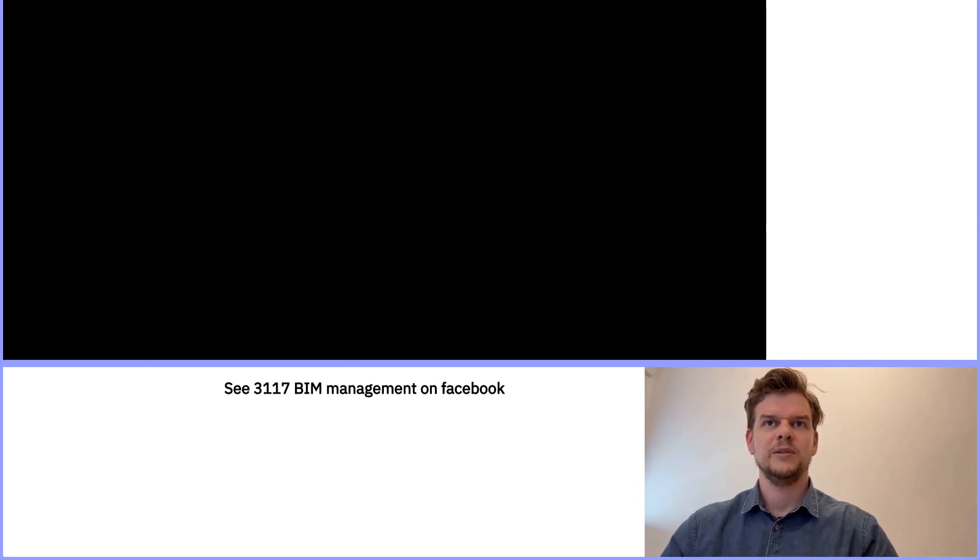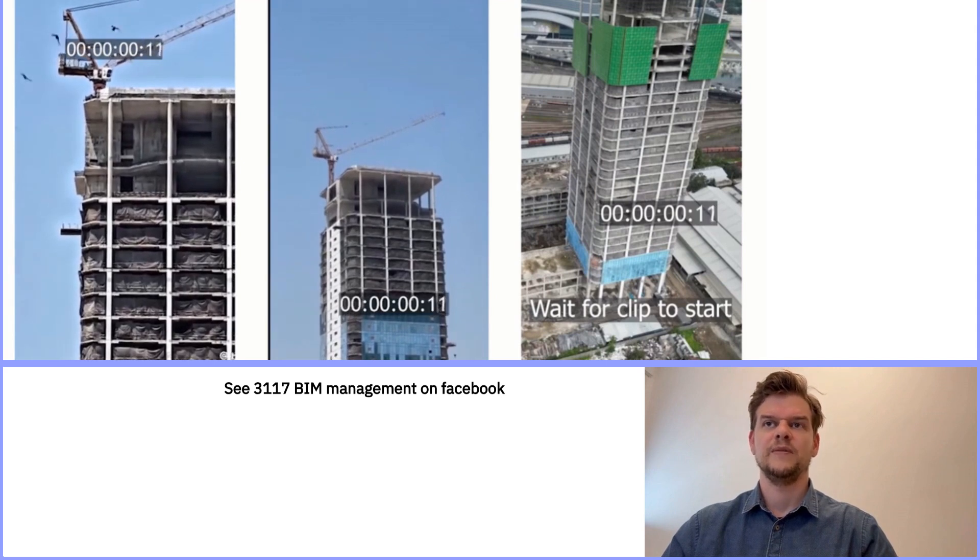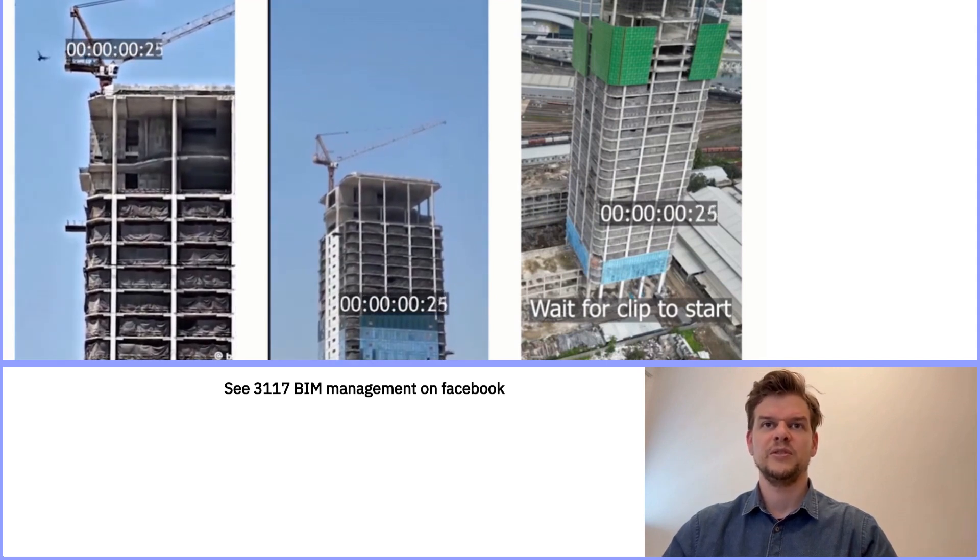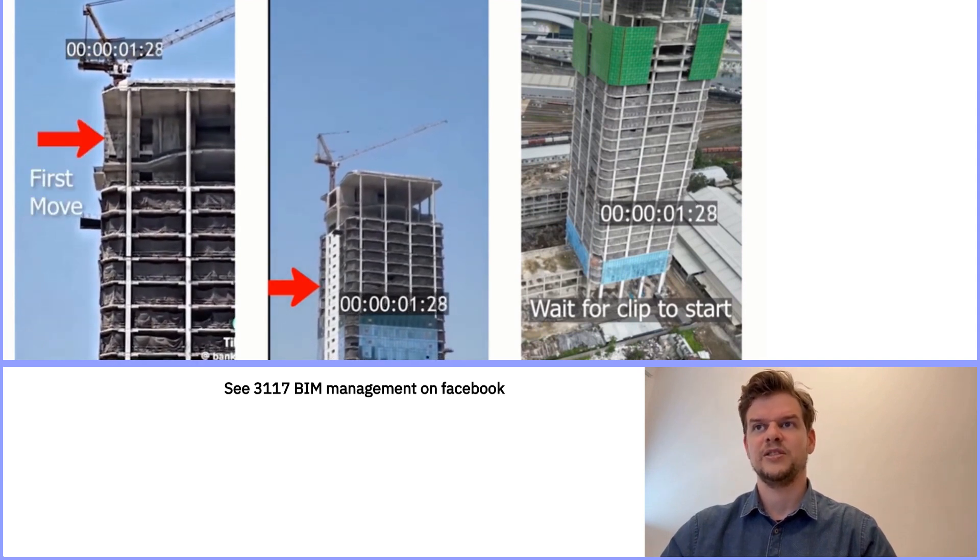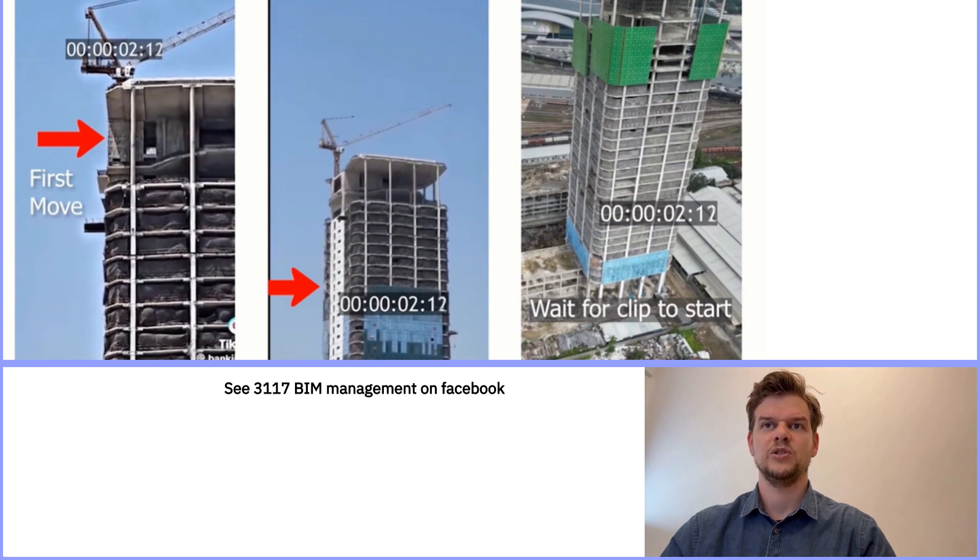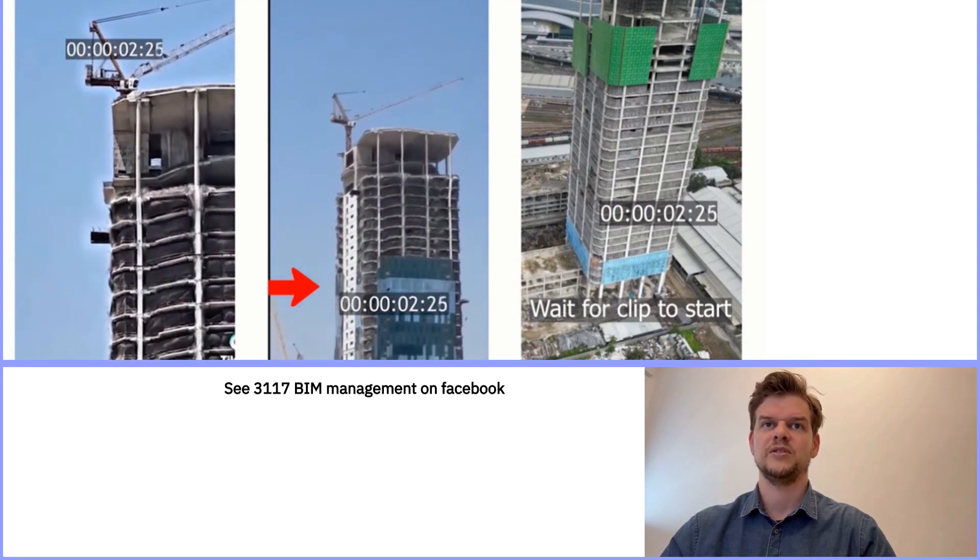Let's take another look at the collapse of the skyscraper in Bangkok. The footage shows the building from three different angles. You'll notice that the first visible movement happens at the top of the building. This matches what we saw earlier. Torsional rotation appears strongest at the top.